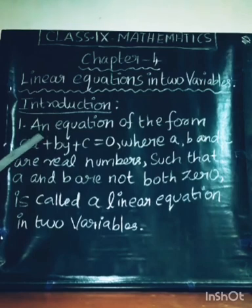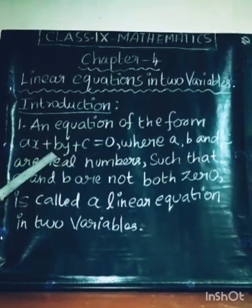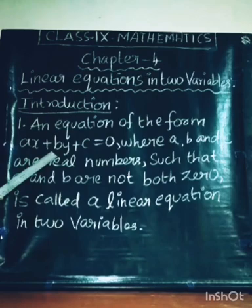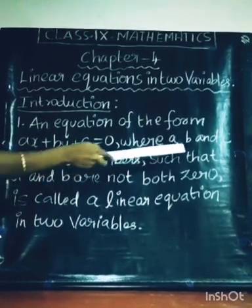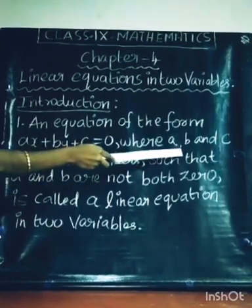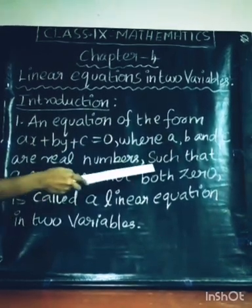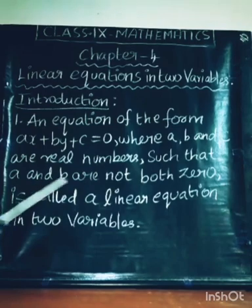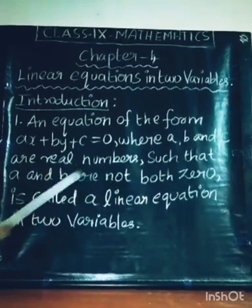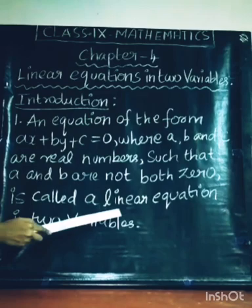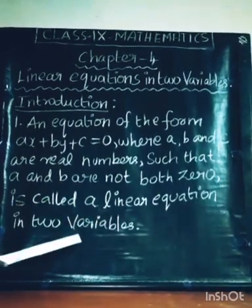Point Number 1: An equation of the form Ax plus By plus C equal to 0, where A, B, and C are real numbers such that A and B are not both 0, is called a Linear Equation in 2 Variables.